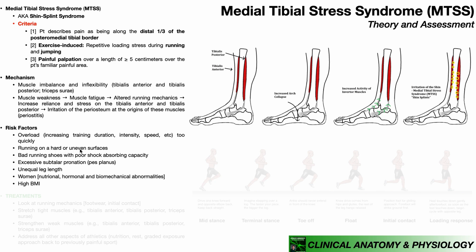Running on hard or uneven surfaces is a risk factor, especially with bad running shoes with poor shock-absorbing capacity. If somebody comes in with suspected MTSS, you need to look at their shoes — maybe they don't fit right, need a special kind, or are so worn out they're causing poor mechanics. You may need to refer them for custom shoe fitting and even orthotics, which are especially important when the person has excessive subtalar pronation, common in pes planus or flat feet, which increases the likelihood of shin splints.